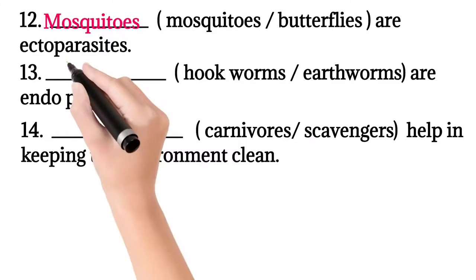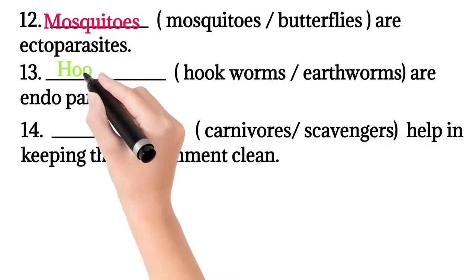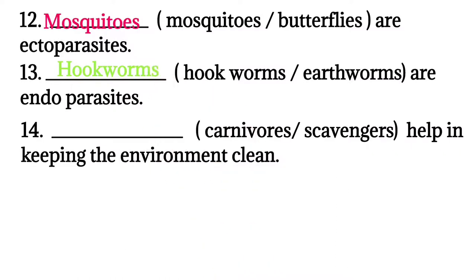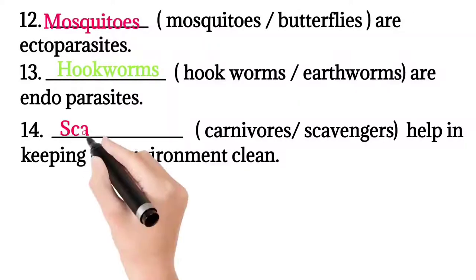Parasites that live on the body of other animals are called ectoparasites. Examples: mosquitoes, lice, fleas, etc. Question thirteen: hookworms or earthworms are endoparasites? Correct answer: hookworms. Hookworms are endoparasites because they live inside the host body.